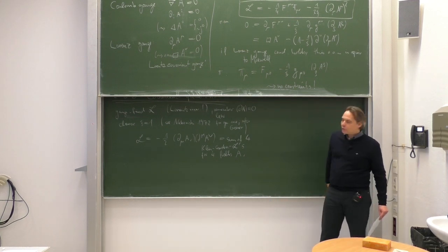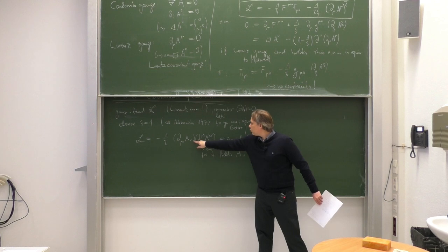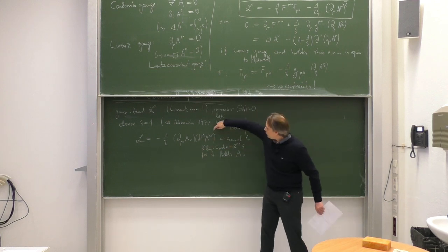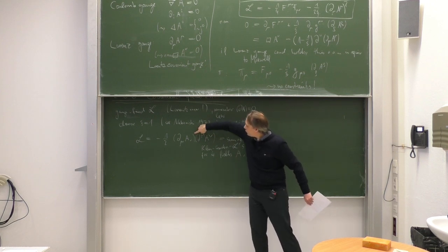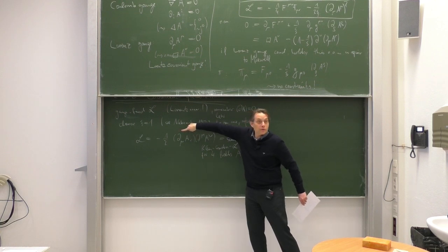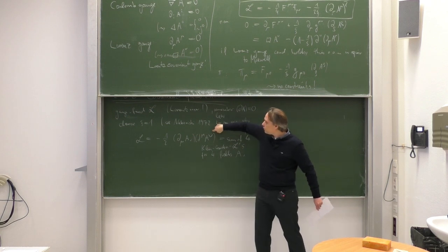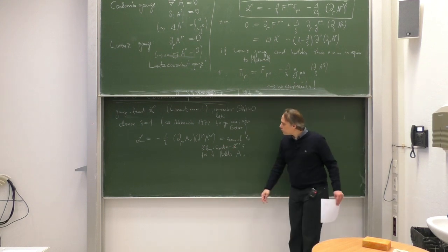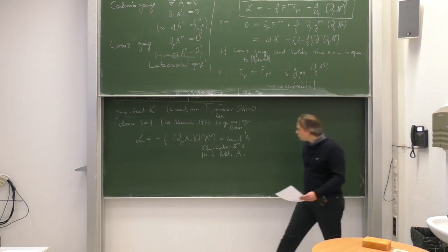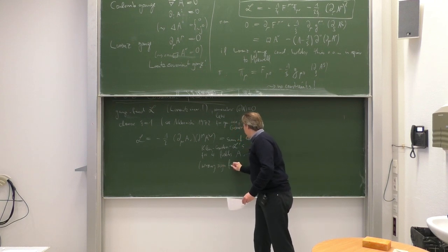What about the sign? The sign in front is minus, and then we have a sum over mu up and down. For mu equals zero, the metric tensor is one, and so we have here minus a Klein-Gordon Lagrangian — the wrong sign. But for the spatial indices i, we get a minus from the metric tensor, and so we have in fact the normal correct sign of a Klein-Gordon Lagrangian. So three times the correct sign, and one time the wrong sign — wrong sign for A zero.